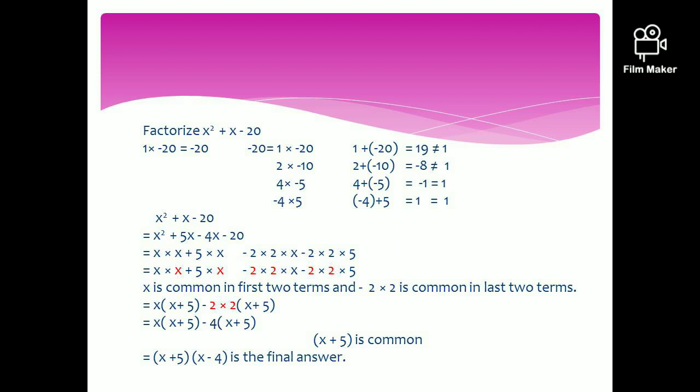The quadratic expression x squared plus x minus 20 breaks into x squared plus 5x minus 4x minus 20. x is common from the first two terms, and minus 4 is common from the next two. Taking x from the first two gives x plus 5; taking minus 4 from the other two gives x plus 5 again. Therefore, x plus 5 is common, and taking it out gives the final answer x plus 5 times x minus 4.